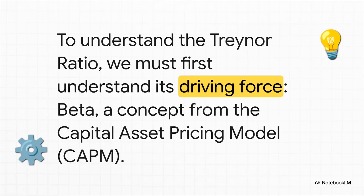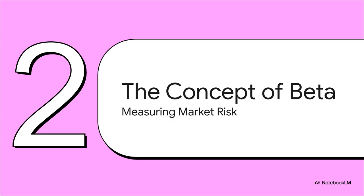To isolate just that market-specific risk, the Treynor ratio uses a really powerful concept that comes from the Capital Asset Pricing Model, or CAPM. And that concept — its secret ingredient — is beta.